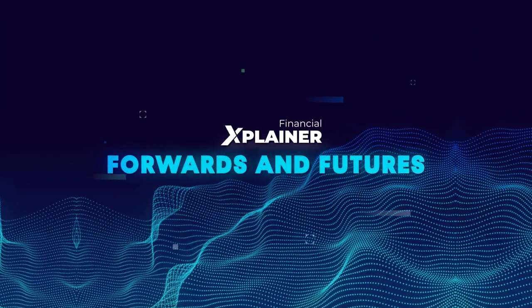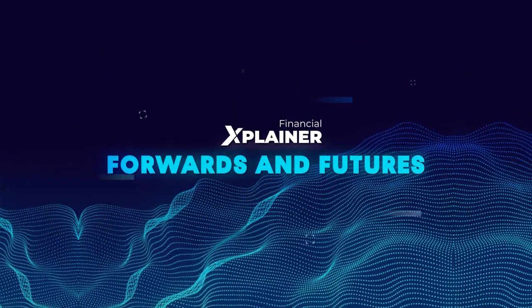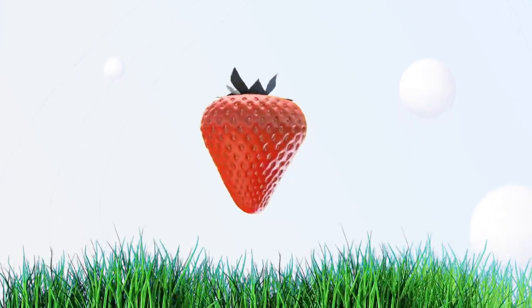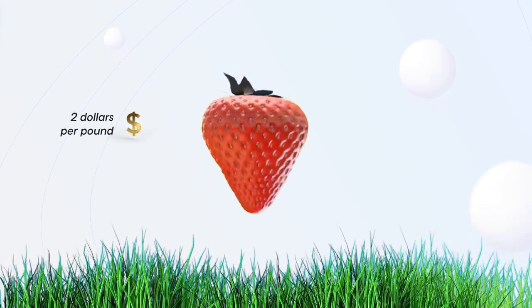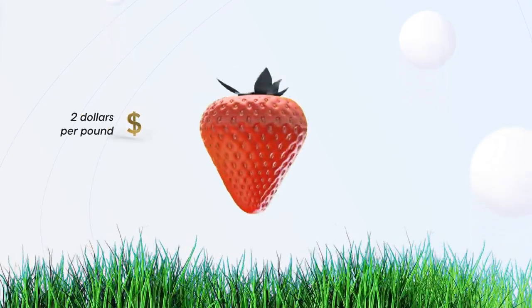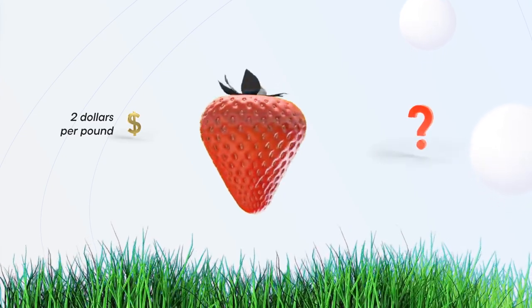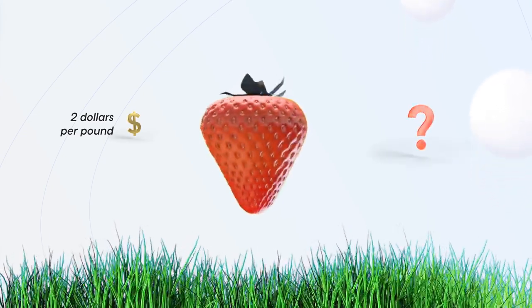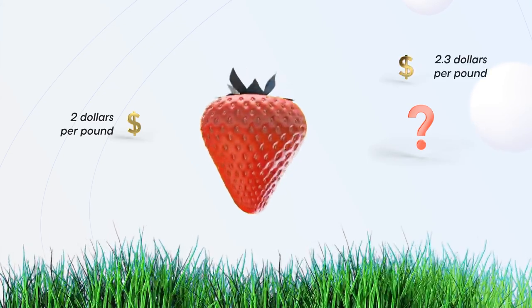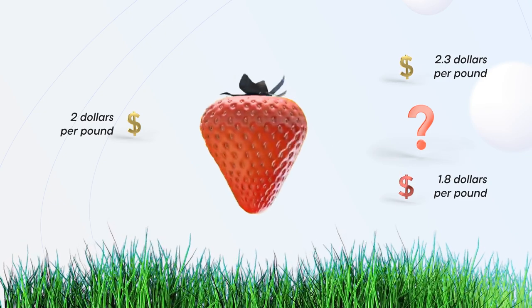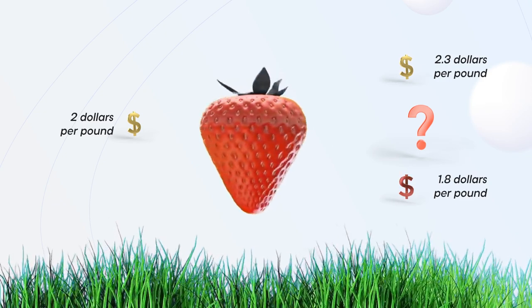Forwards and futures. Imagine you have a farm where you grow strawberries from March to July. You'd like to sell your strawberries for $2 a pound — a fair price that covers your cost and gives you some profit. But you don't know how much strawberries will cost in June. Maybe $2.3, which is good, but maybe $1.8, which is bad, because this price won't cover your expenses.